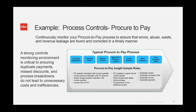Here's an example of process controls where you actually start to monitor throughout your procure-to-pay process, looking for purchase order quantity mismatches with invoice quantities, goods receipt mismatches with invoice quantities, duplicate payments, and split purchases. There are a number of different policies you may have in place that you can set up within the rule book to monitor what's going on with those processes and the transactions driving them.